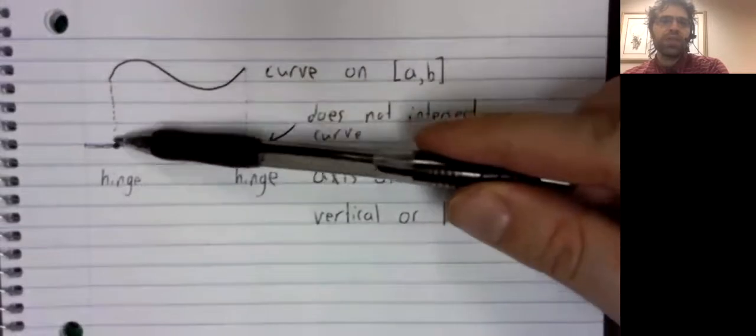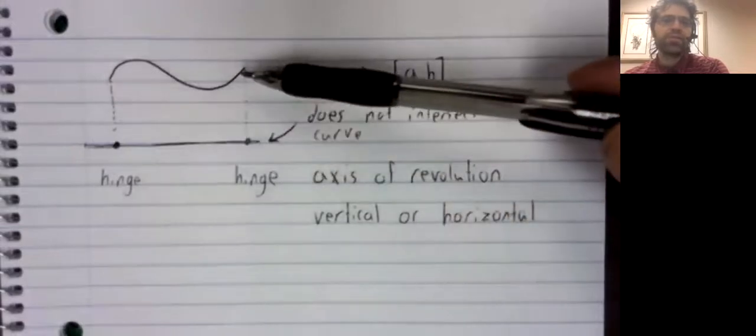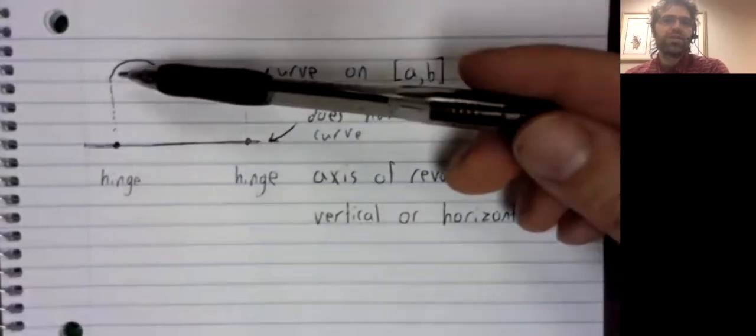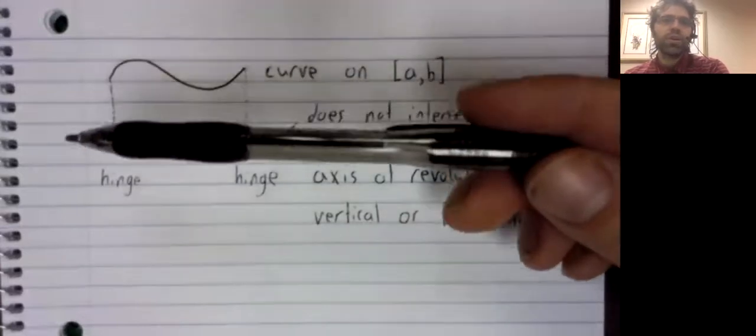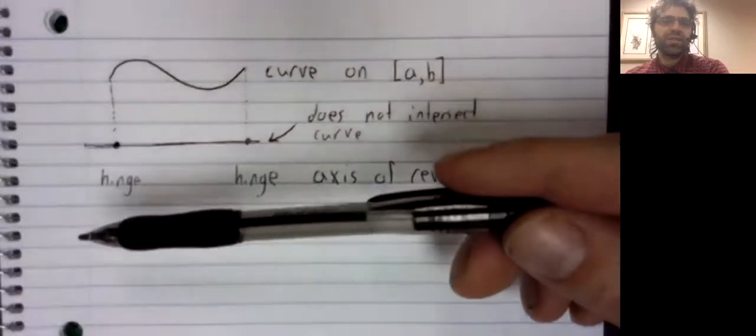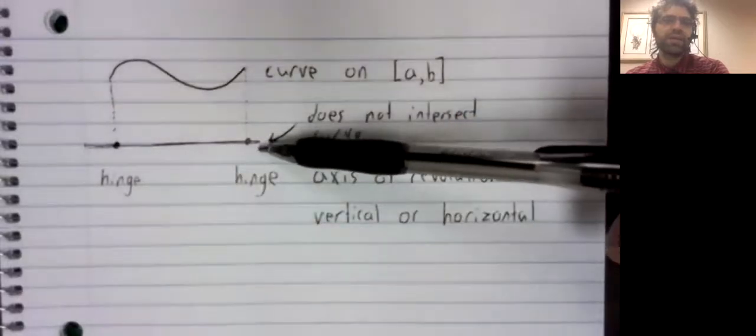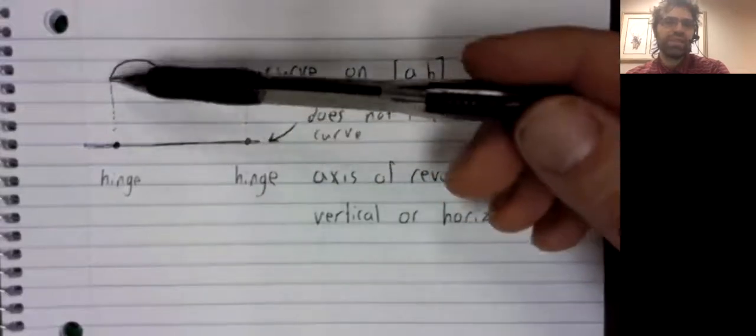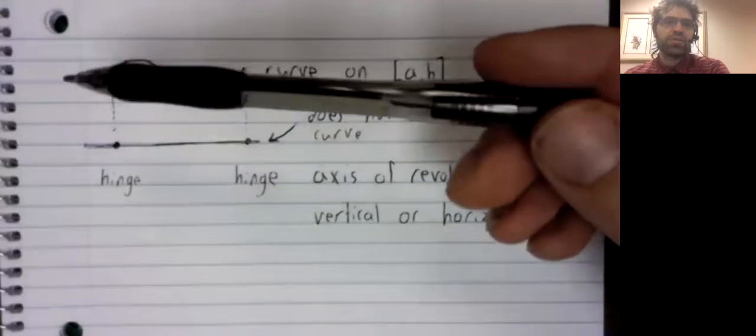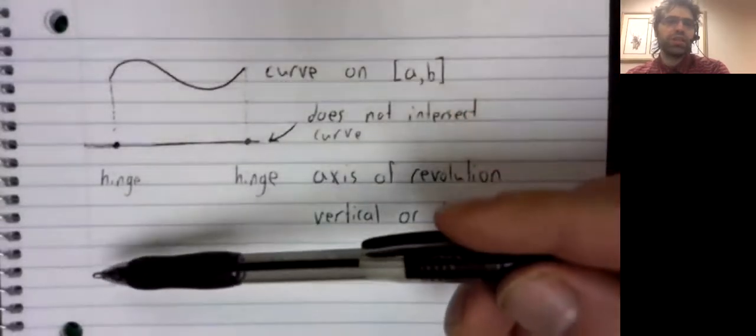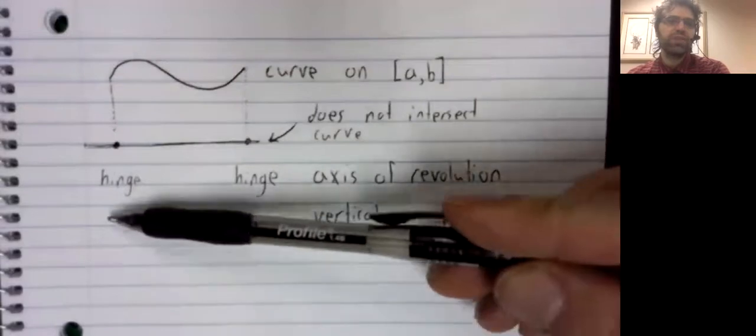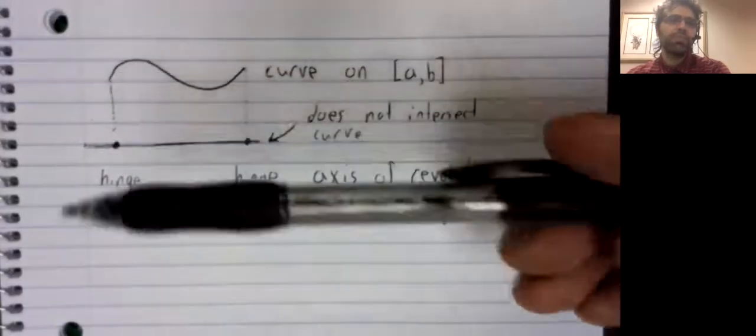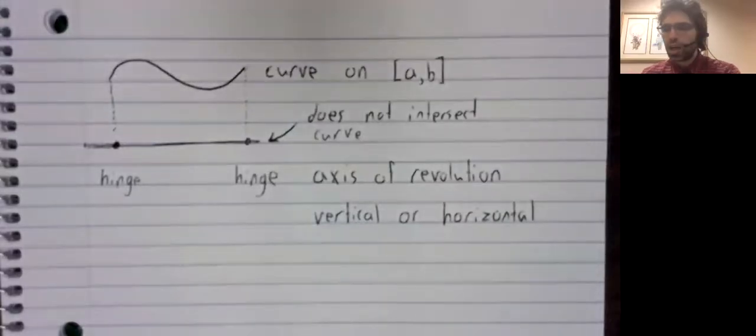But this length is fixed, and this length is fixed. So, as we rotate the curve, its distance from this axis is not changing. And if we take this curve and rotate it 360 degrees, we'll wind up right back where we started.